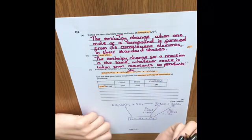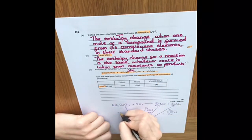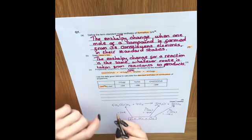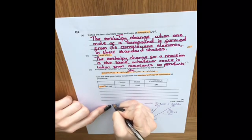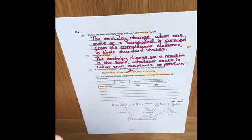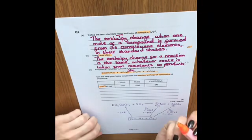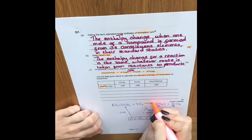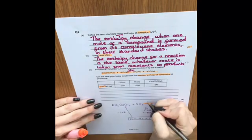And then the last value we've been given is for the formation of propanone, which is -248. And obviously here we've only got one mole, so that just stays as it is.